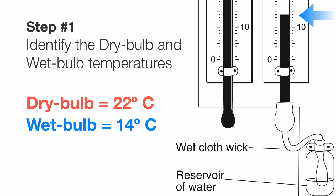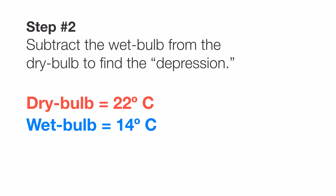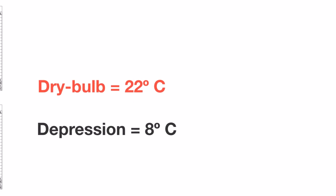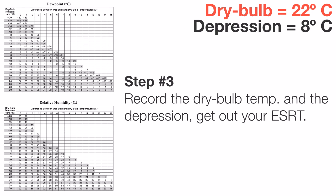So now that we have our dry bulb and wet bulb recorded, we have to go to step two, which is subtracting them to find what we call the depression. In this case, 22 minus 14 equals 8 degrees Celsius. Now the next step will be to go to our chart. We have to keep in mind we're going to record what our dry bulb is and what our depression is. Those are the two important numbers.